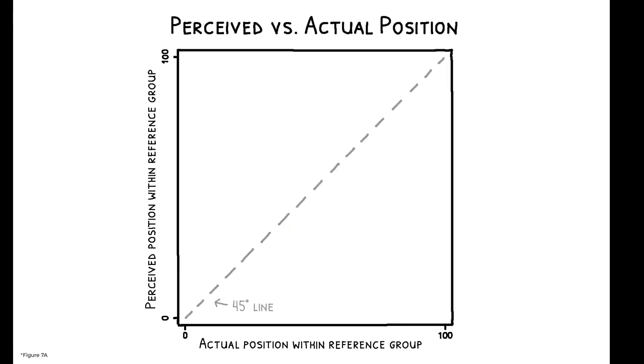But there are also systematic misperceptions. In particular, there is a recurrent pattern of center bias. People generally think they are closer to the center of the income distribution than they actually are.